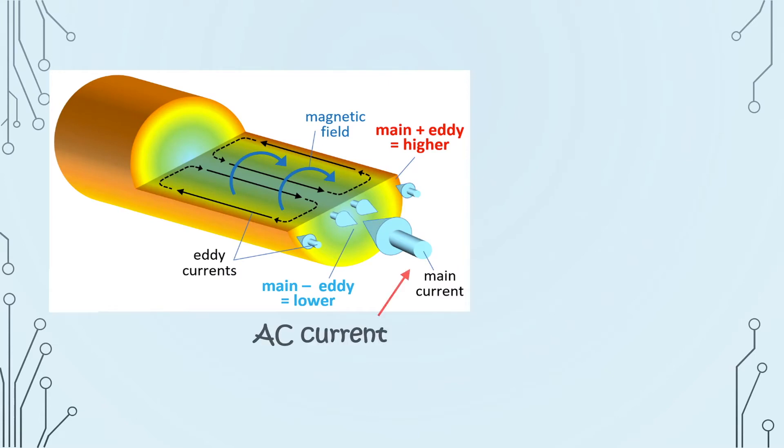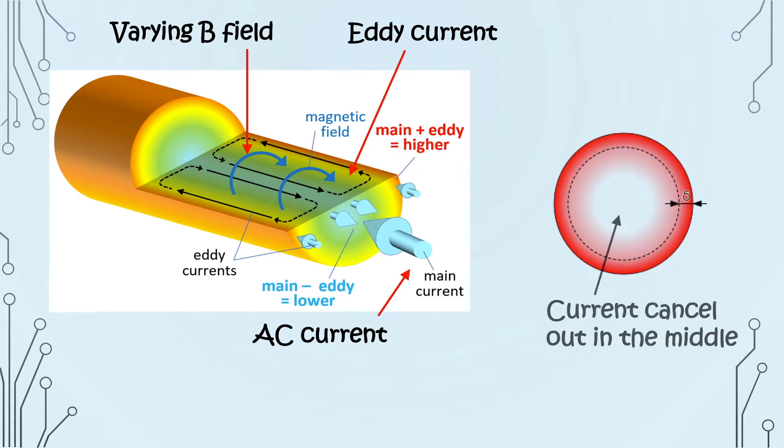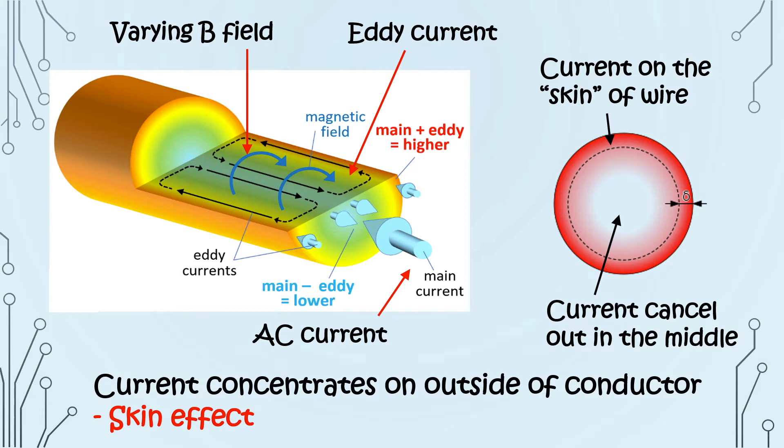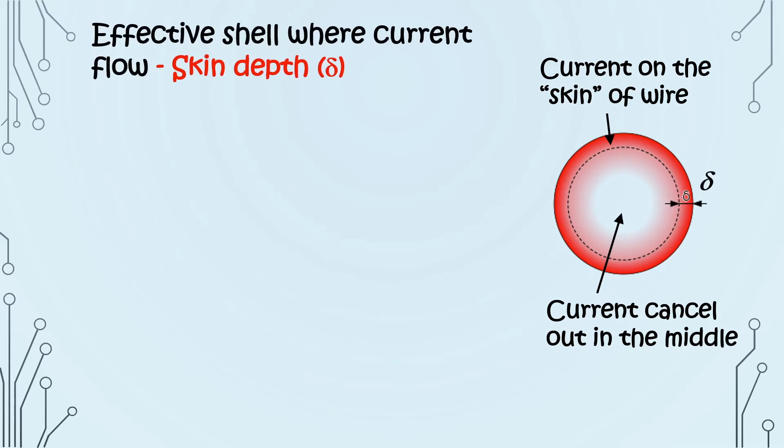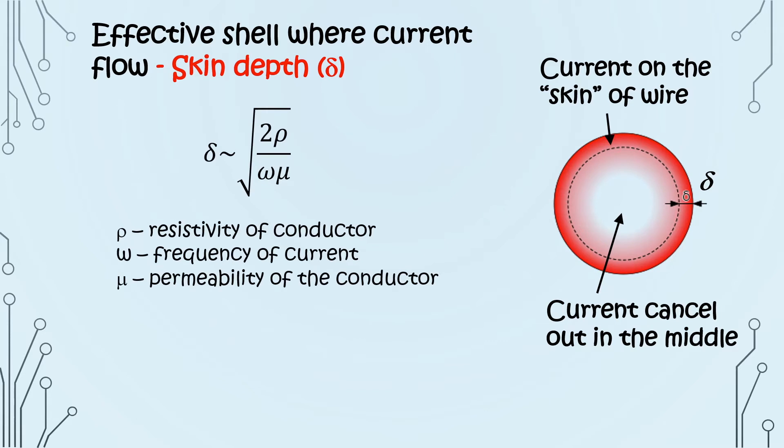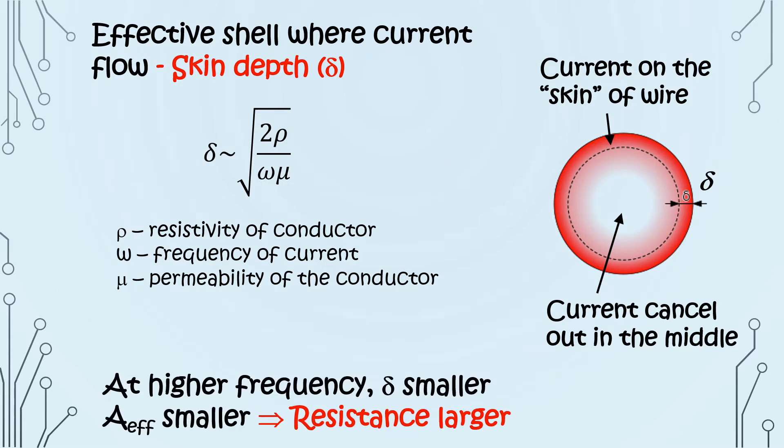Specifically, when an AC current is applied, a varying magnetic field is generated along the wire. This varying magnetic field induces an eddy current inside the wire, and it will cancel out the applied current in the middle of the wire. As a result, the AC current will be concentrated on the outside surface of the wire. This is known as skin effect. And the effective shell where most current flow is known as the skin depth. Skin depth can be given by an equation like this, with the square root of the frequency in the denominator. So we see that at higher frequency, skin depth is smaller. The effective cross-sectional area is then smaller, and therefore resistance is larger.